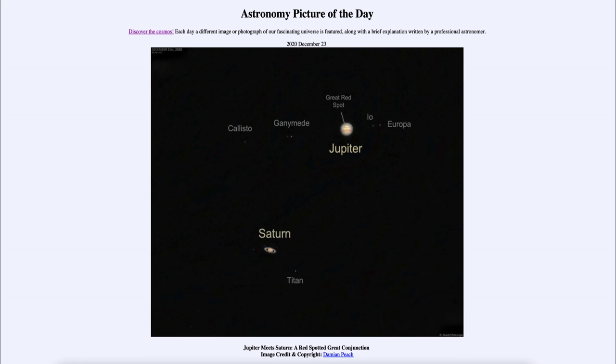Here we get to see both Saturn and Jupiter as part of the great conjunction, as seen just a couple of days ago. So that was our picture of the day for December 23rd of 2020, titled Jupiter meets Saturn, a red spotted great conjunction. We'll be back again tomorrow for the next picture. So until then, have a great day everyone, and I will see you in class.